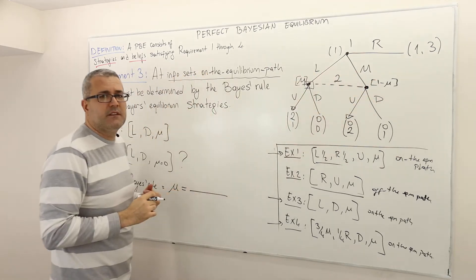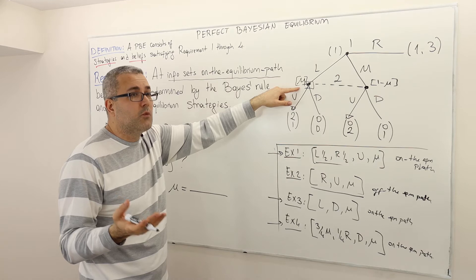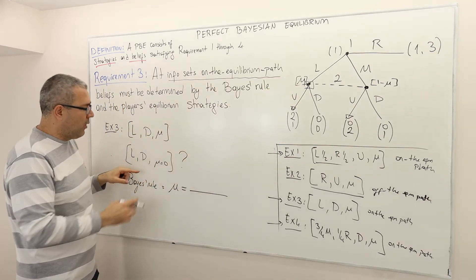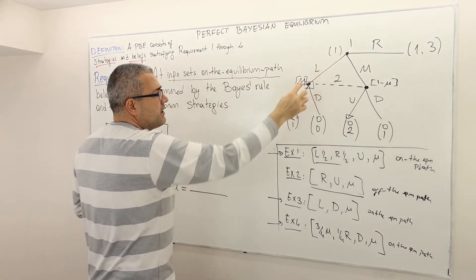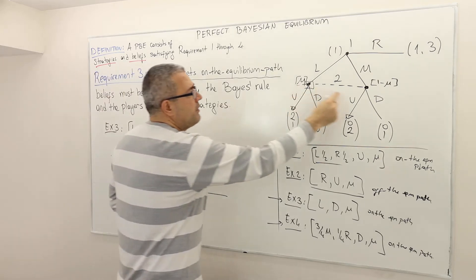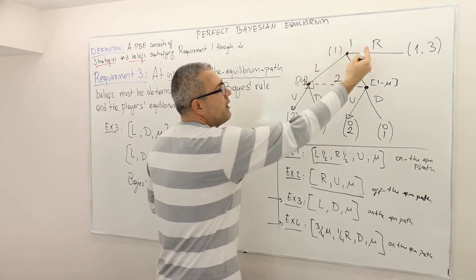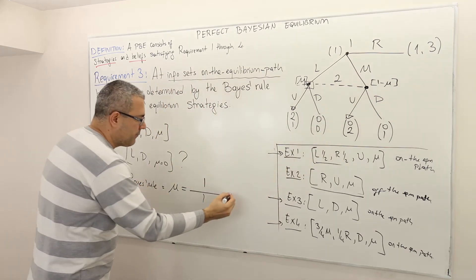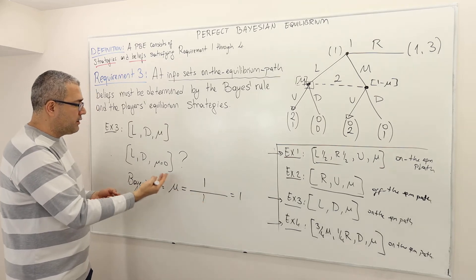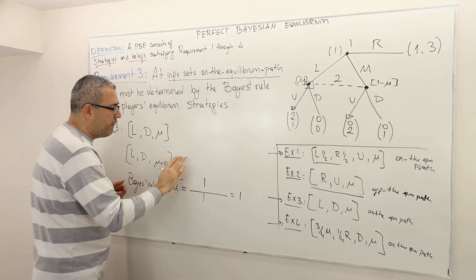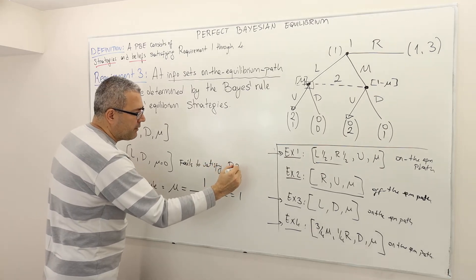According to this strategy profile, the likelihood that player one is going to end up at this decision node is one because he's going to play left. The probability of reaching this information set is also one because player one is not going to play right. So one over one equals one — that means according to Bayes' rule, player two should be holding mu equals one. So this strategy profile fails to satisfy requirement three.